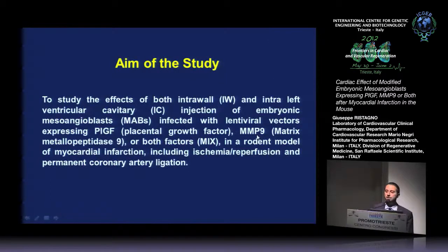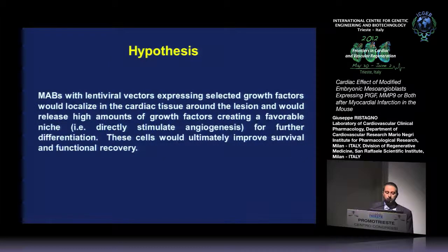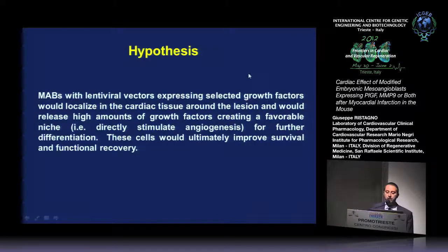For this reason, we decided to study the effect of mesangioblasts injection — or mesangioblasts modified by infection with lentiviral vectors expressing PLGF, MMP9, or both factors — in a model of myocardial infarction. We also decided to use two different models of myocardial infarction: one was an ischemia reperfusion model, and another was a permanent coronary artery ligation. We also decided to inject cells either into the left ventricle cavity or into the left ventricle free wall. We hypothesized these modified mesangioblasts would localize in cardiac tissue around the lesion, release growth factors, create a favorable niche by improving neoangiogenesis, and ultimately improve survival and functional recovery.